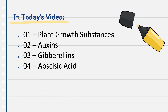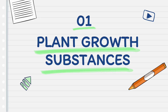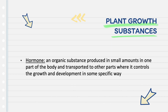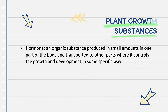Let us begin with plant growth substances. A hormone is an organic substance produced in small amounts in one part of the body and transported to other parts where it controls growth and development in some way.